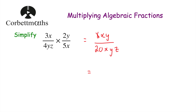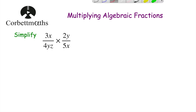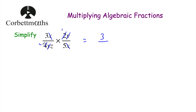Another approach is to cancel down before you multiply. Looking at each numerator and the other denominator: this numerator and that denominator are both divisible by x, so divide both by x. Looking at the two and the four, we can divide both by two to get one and two. Then there's a y here and a y here, so divide both by y. Now just multiply: three times one is three for the numerator, and two z multiplied by five is ten z for the denominator. We get three over ten z. Cancelling down before multiplying can make it a little bit easier.